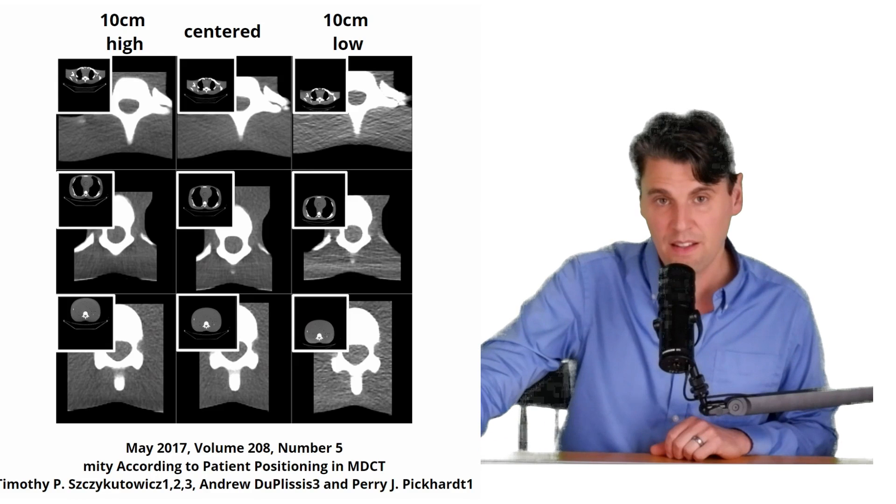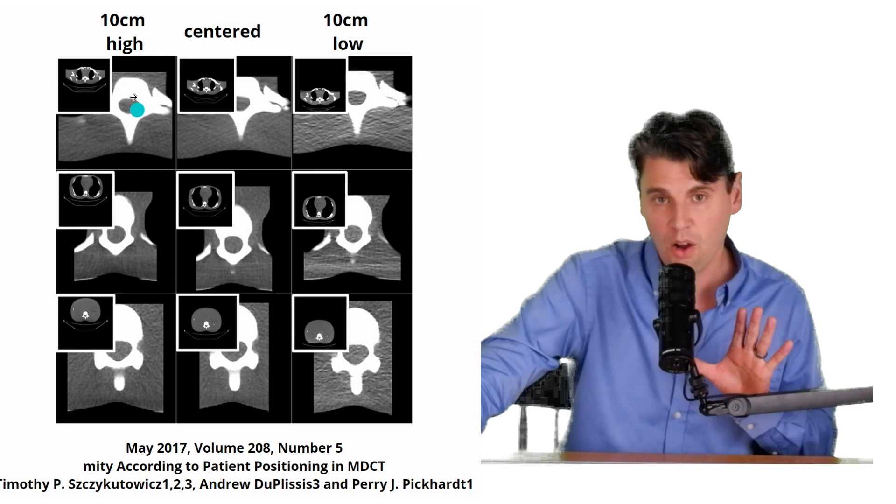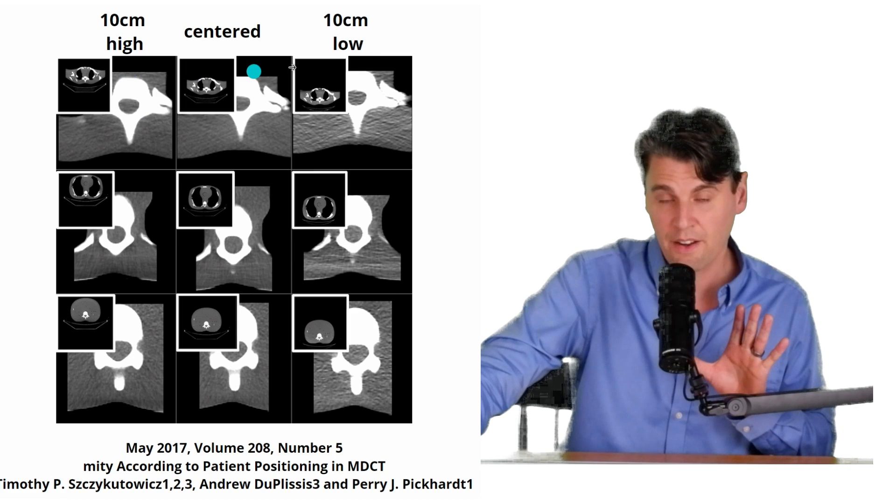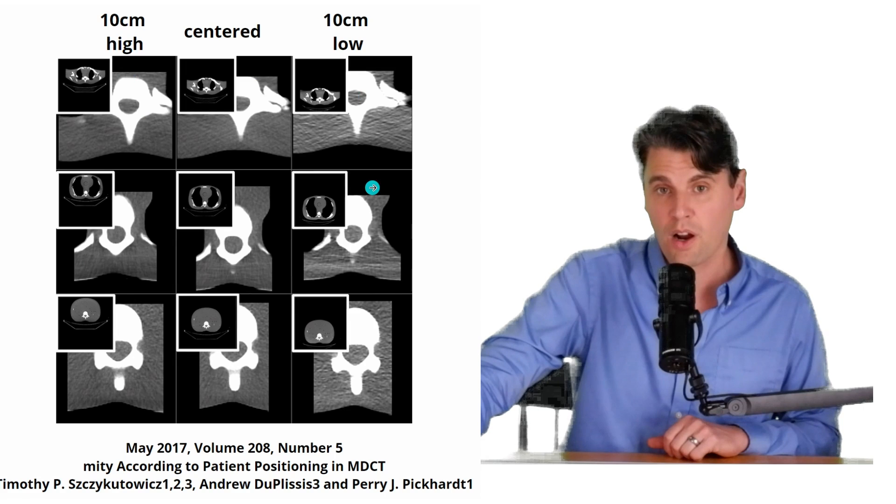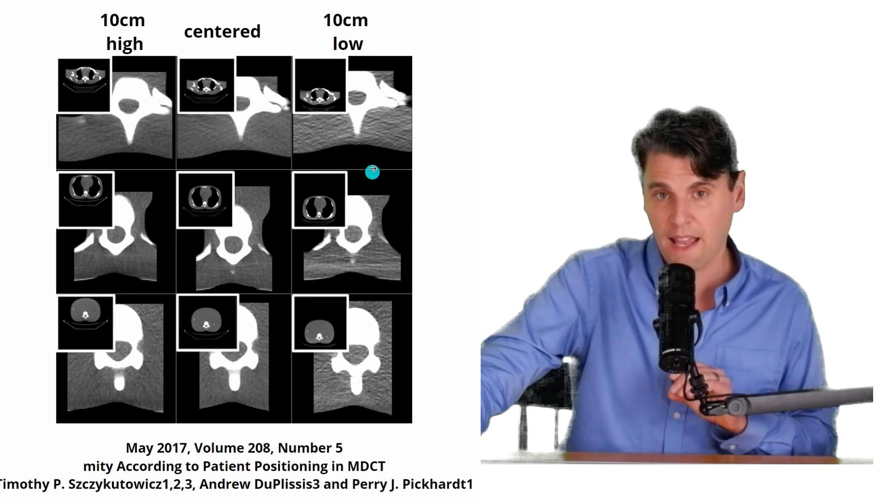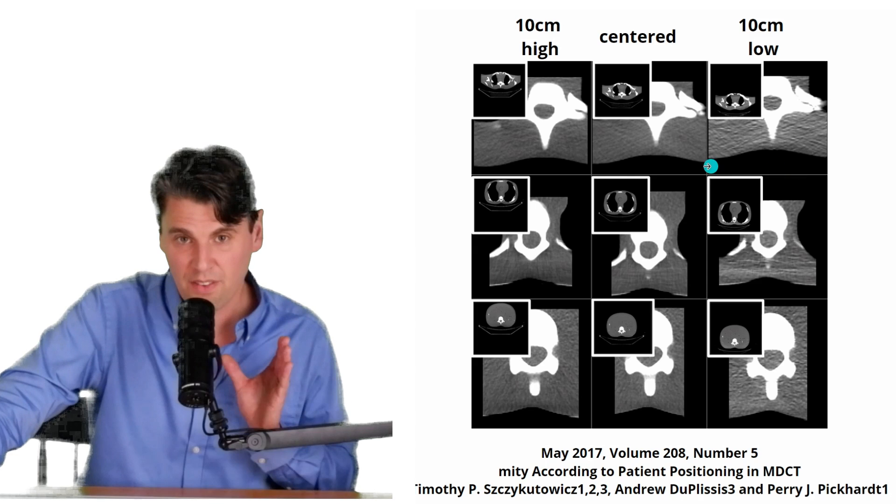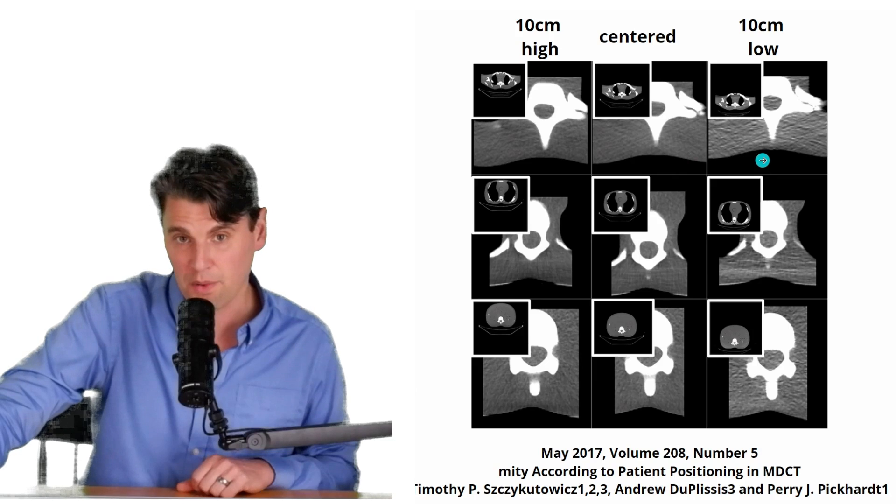And then a little bit later, Tim Stikotovic at Madison did similar experiments showing even more extreme differences. In this scenario, the case where you're too high, where you're centered, and where you're too low, and for a region of interest that's around the spine, it's going to be really worse. There was a standard deviation that was double going from the center to the 10 centimeter too low acquisition.